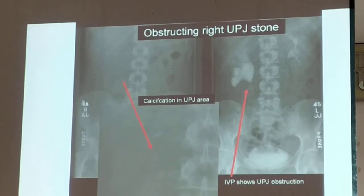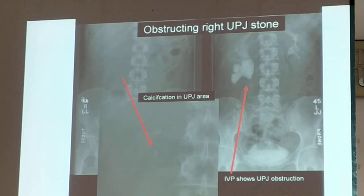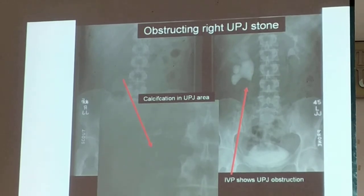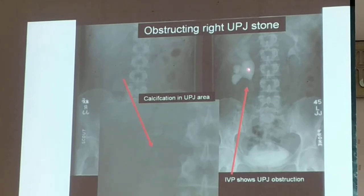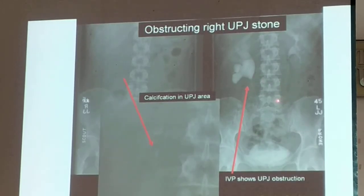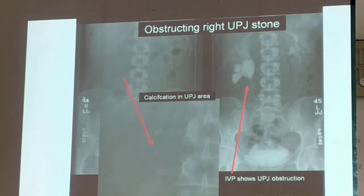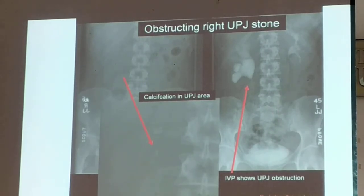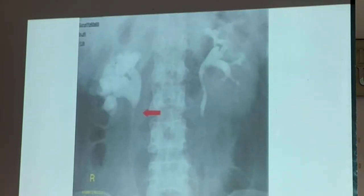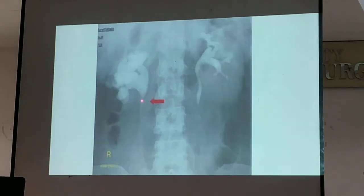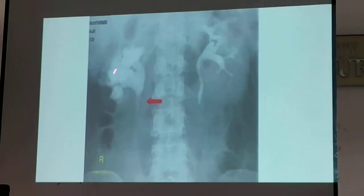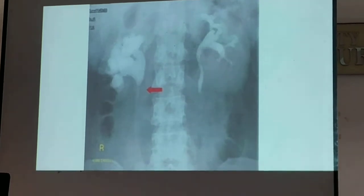It's obstructed, so the dye cannot go down. This is not a staghorn calculus — rather, this is hydronephrosis. There would be obstruction of your calices and your pelvis. The obstruction is here at the ureteropelvic junction — that is typical of hydronephrosis of the right kidney. This one, it's more on the left, so hydronephrosis left.